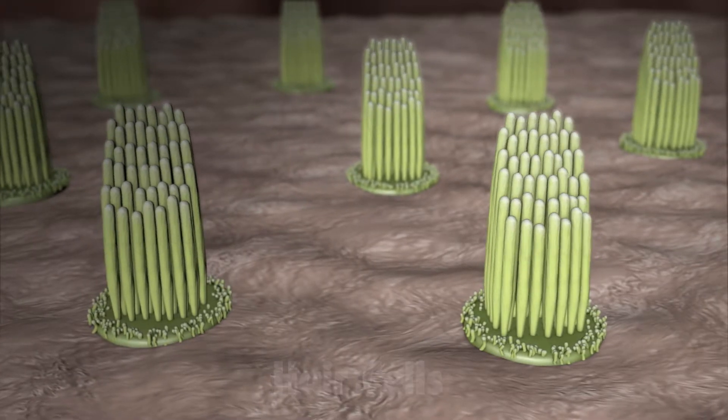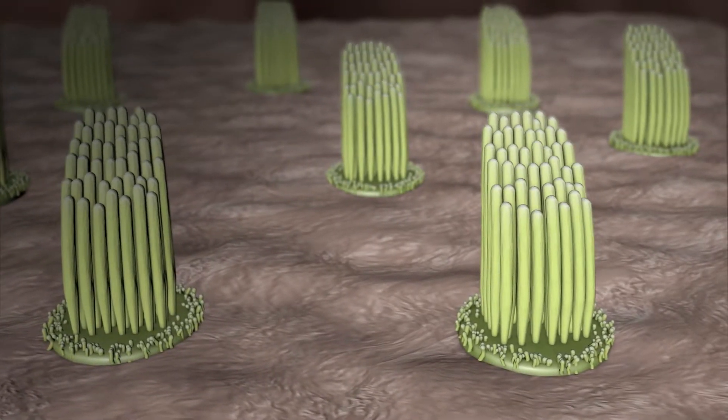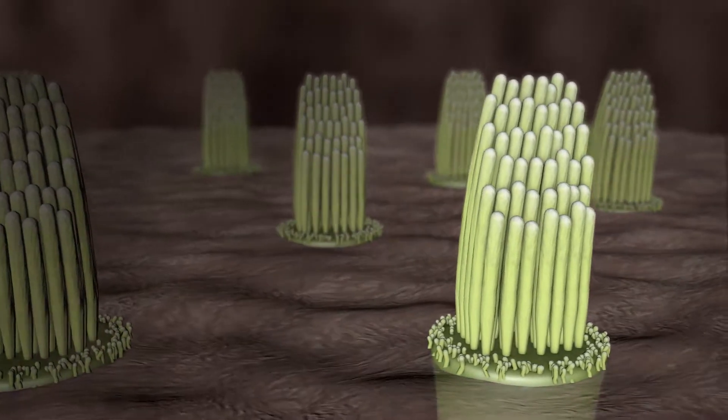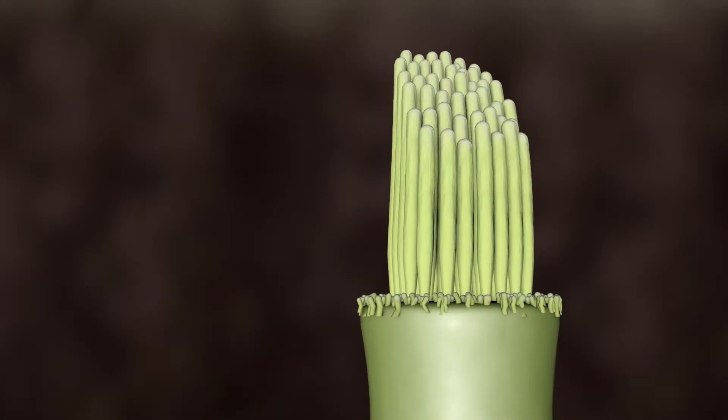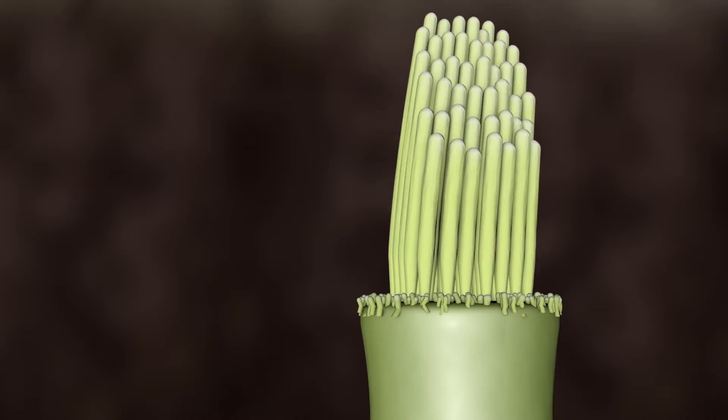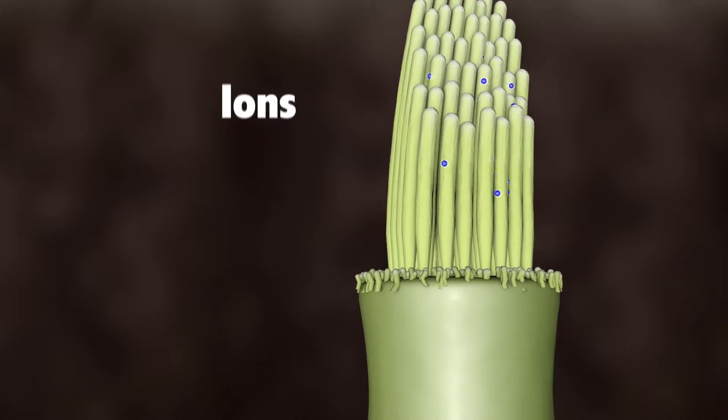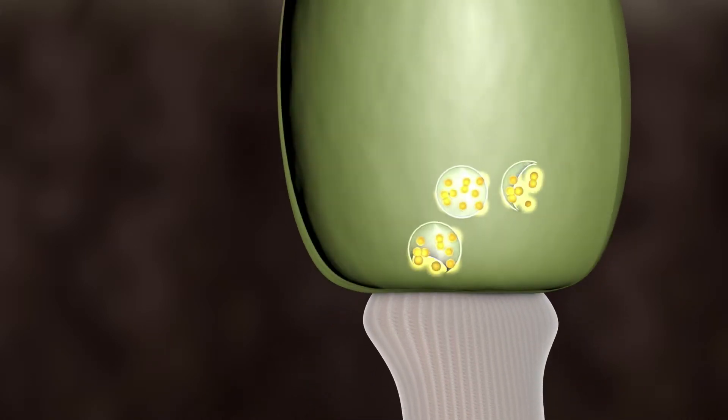The hair cells inside the cochlea ride these waves, and the hair bundles are moved. The hair bundle on top of the hair cell turns these movements into electrical signals. As the hair bundles are moved, ions rush into the top of the hair cells, causing the release of chemicals at the bottom of the hair cells.